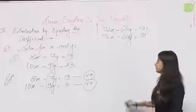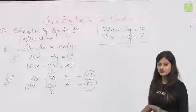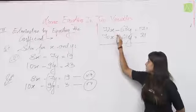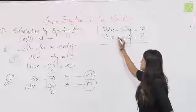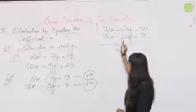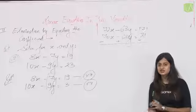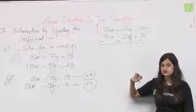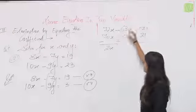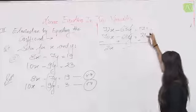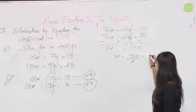यहाँ दोनों y terms negative हैं, तो add करने पर cancel नहीं होंगी। इसलिए दोनों equations को subtract करेंगे। Sign reverse हो जाते हैं। 72x − 70x = 2x। 63y − 63y = 0। 171 − 161 = 10। Wait — 19×9 = 171 और 23×7 = 161। So 2x = 10, x = 5।